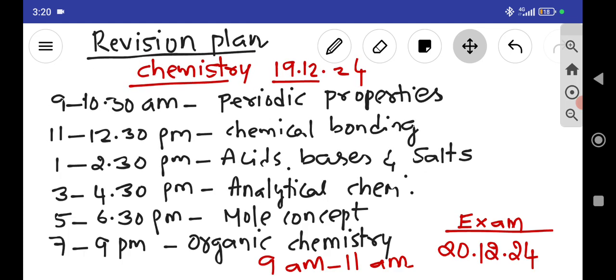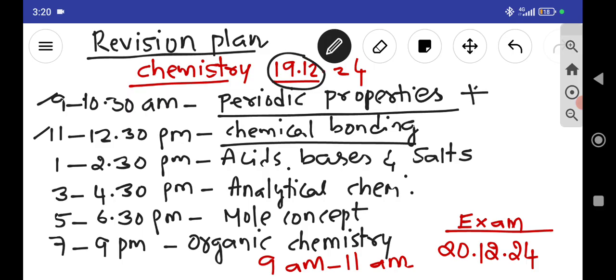Now what is the revision plan? Again I have given you an example taking chemistry. If you observe here, on 19th you are having revision. That is 9 to 10:30 you are going to study periodic properties, then 11 to 12:30 chemical bonding. Here, we have to solve all the question answers also along with the revision.